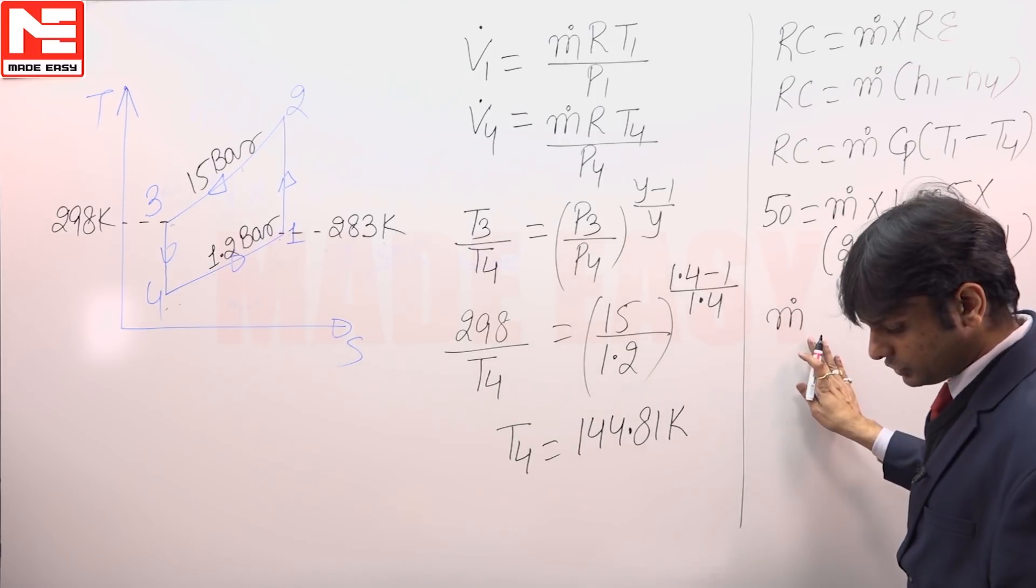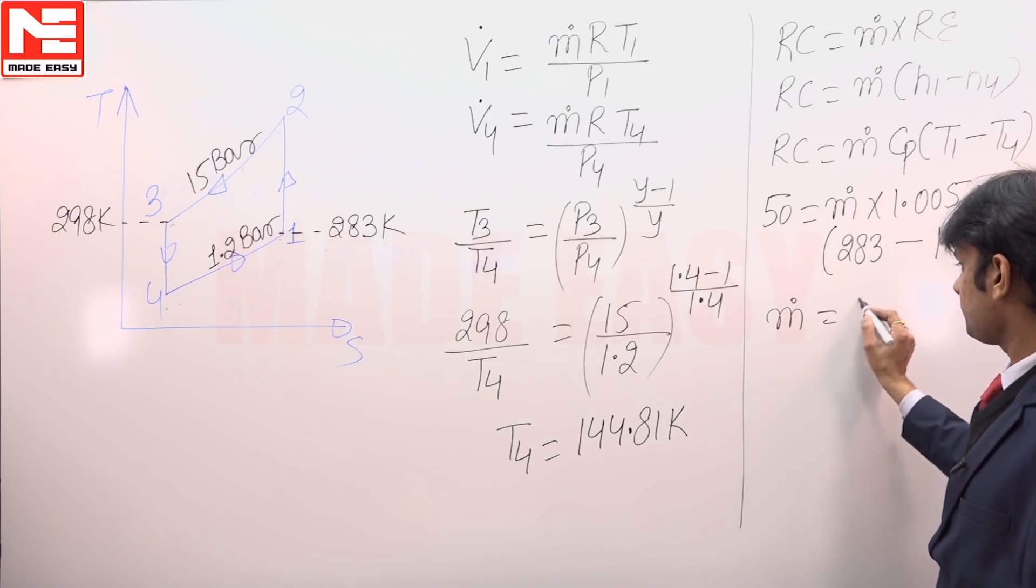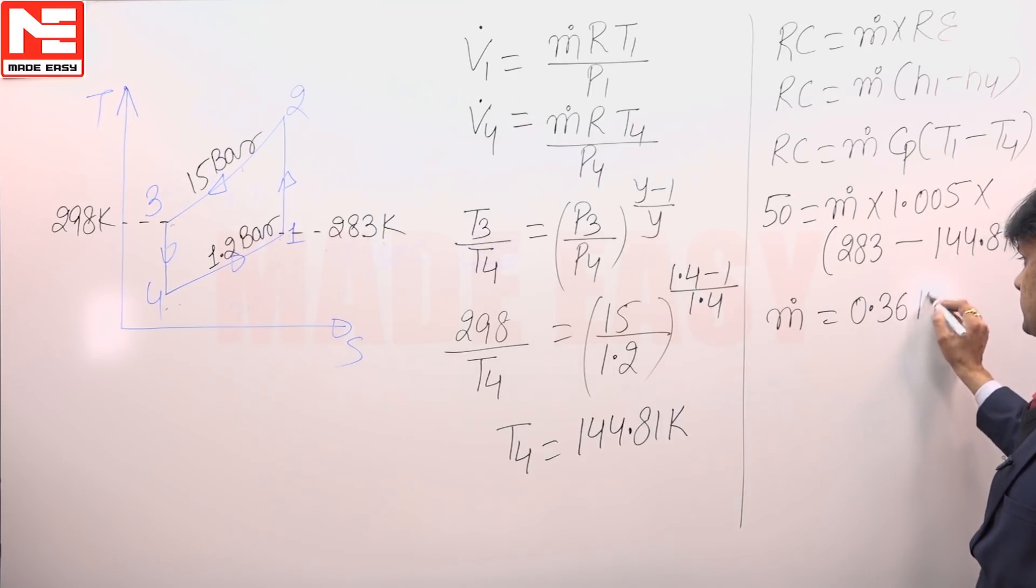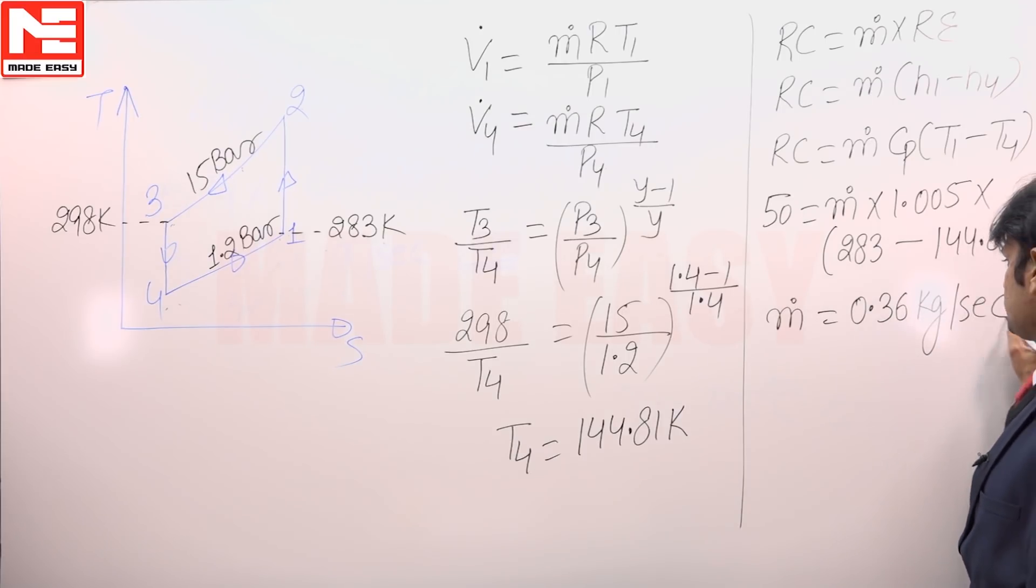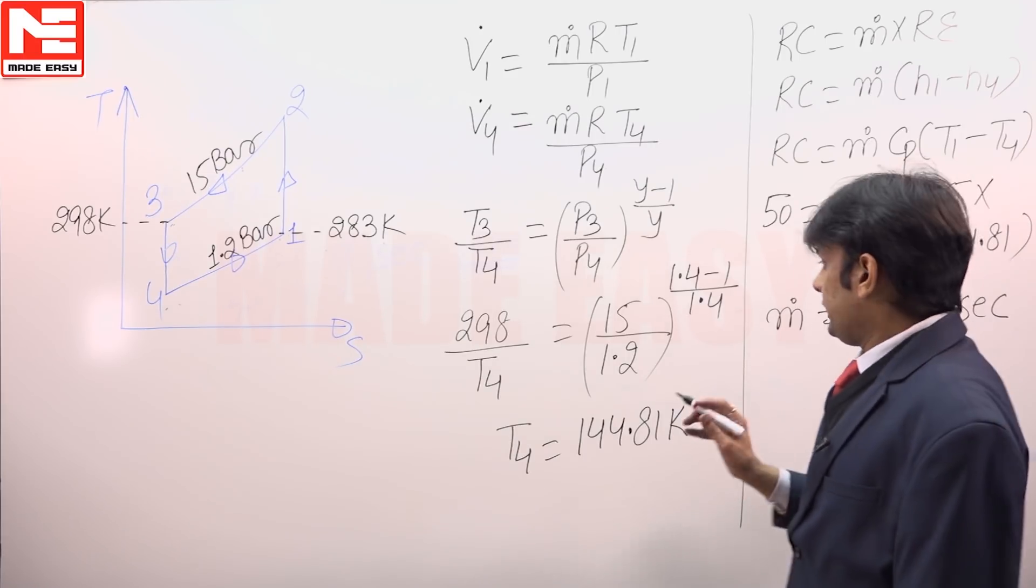By using this equation, we will get the value of M dot as 0.36 kg per second.